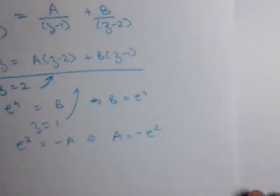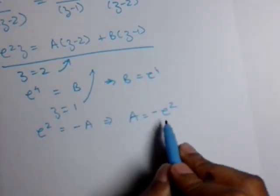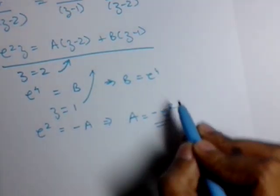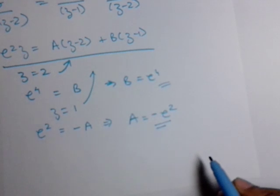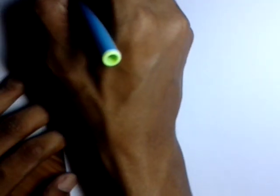Now the question can be written in this form where the value of A and B are given: the value of A is minus e squared and the value of B is e raised to 4. So now our question is translated in this form.